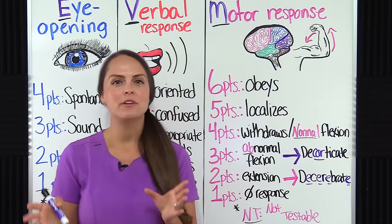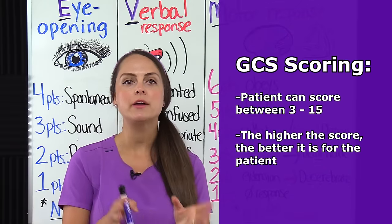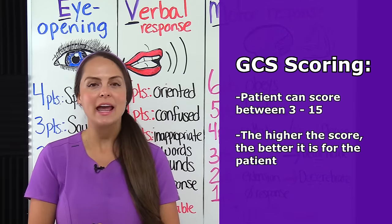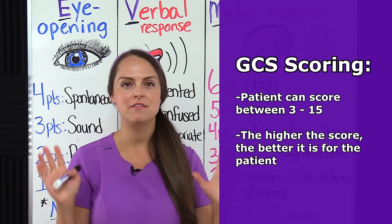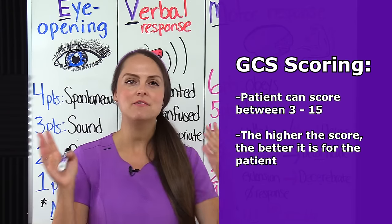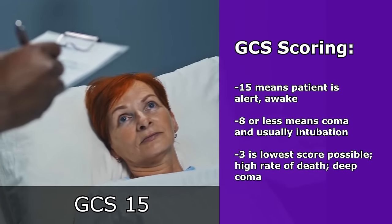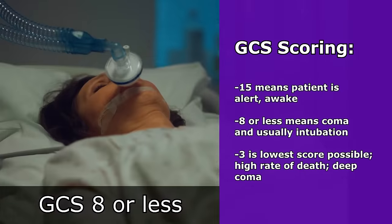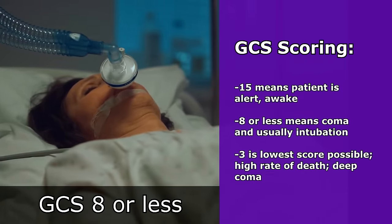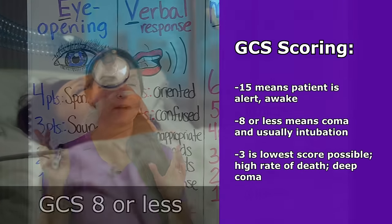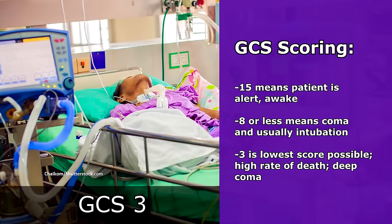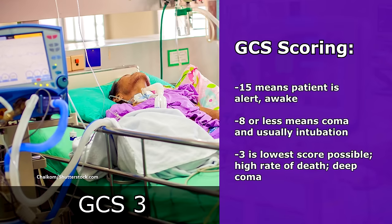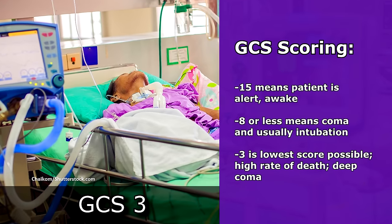Now let's look at the scoring for this scale. A patient can score anywhere between a three and a 15 — the higher the score, the better. A score of 15 means the patient is alert and awake. A score of eight or less means they are in a coma and usually require intubation, because airway reflexes that help protect us aren't working well. A score of three is the lowest possible, with a high rate of death, usually associated with a very deep coma and severe head injury.